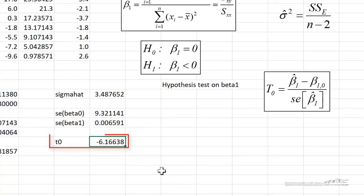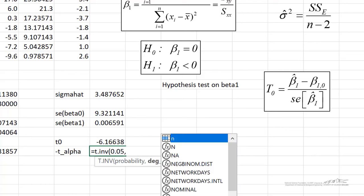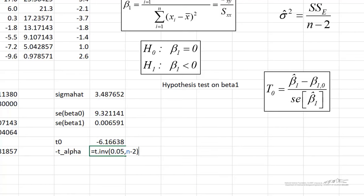This means that our test statistic is negative 6.16. We test this against a negative t_alpha with 2 degrees of freedom. T dot inv, and we're going to use an alpha of 0.05, n minus 2 degrees of freedom. And when we do that that's negative 2.015.